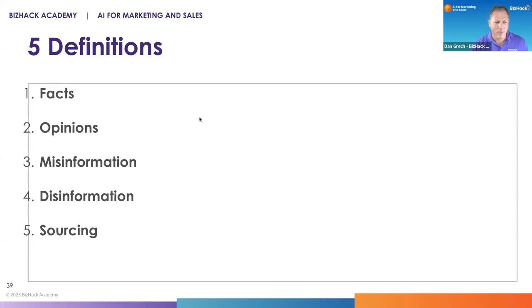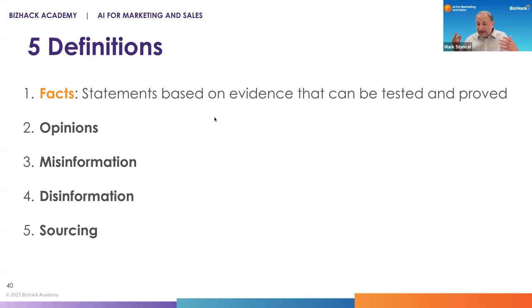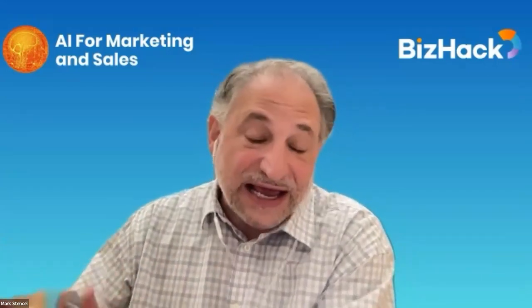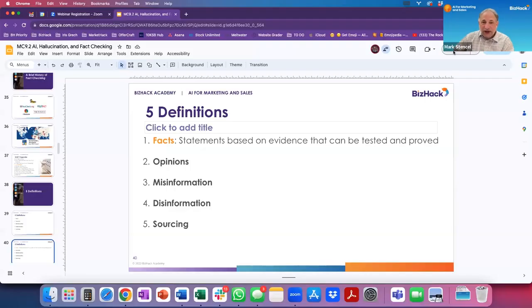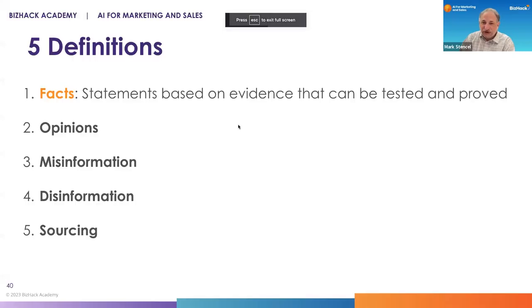We'll start with facts. Facts are basically statements that can be proved, that can be tested, that can be validated. That doesn't necessarily mean they're accurate, but a factual statement is something that you can check — it is trying to convey solid information that is grounded and sourced. We can't always say that facts are right or wrong; this is essentially what fact checkers do for a living, which is decide which ones are accurate, which aren't, and which are somewhere in the mushy middle.